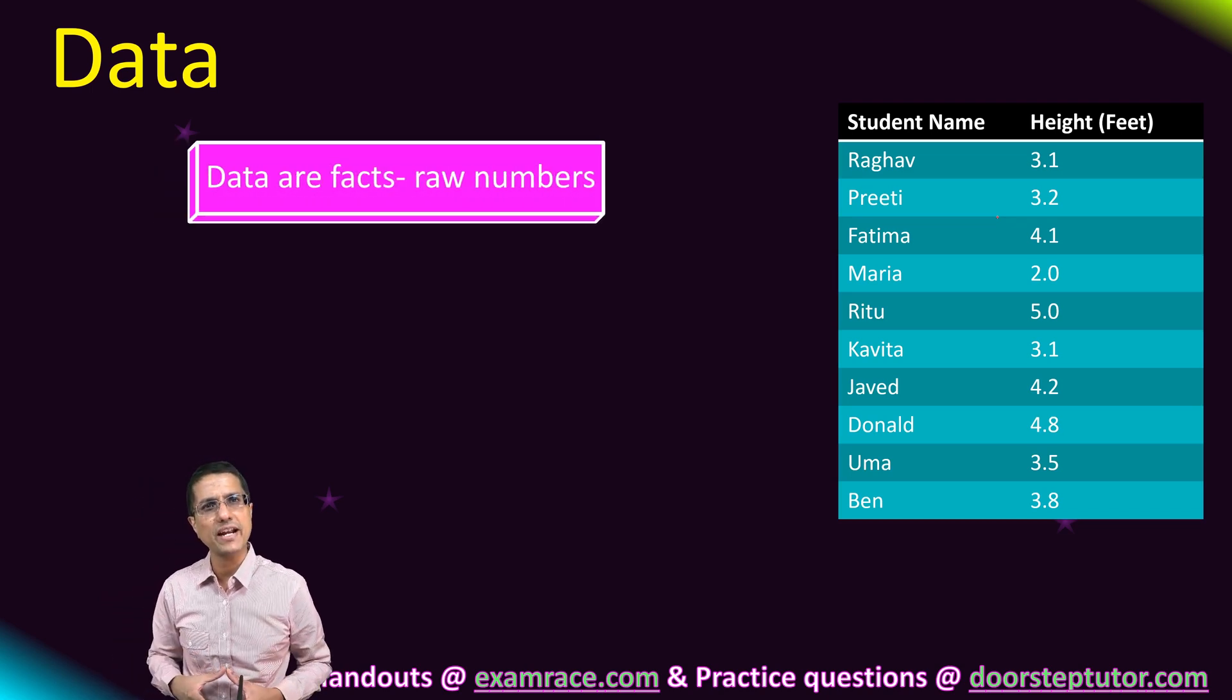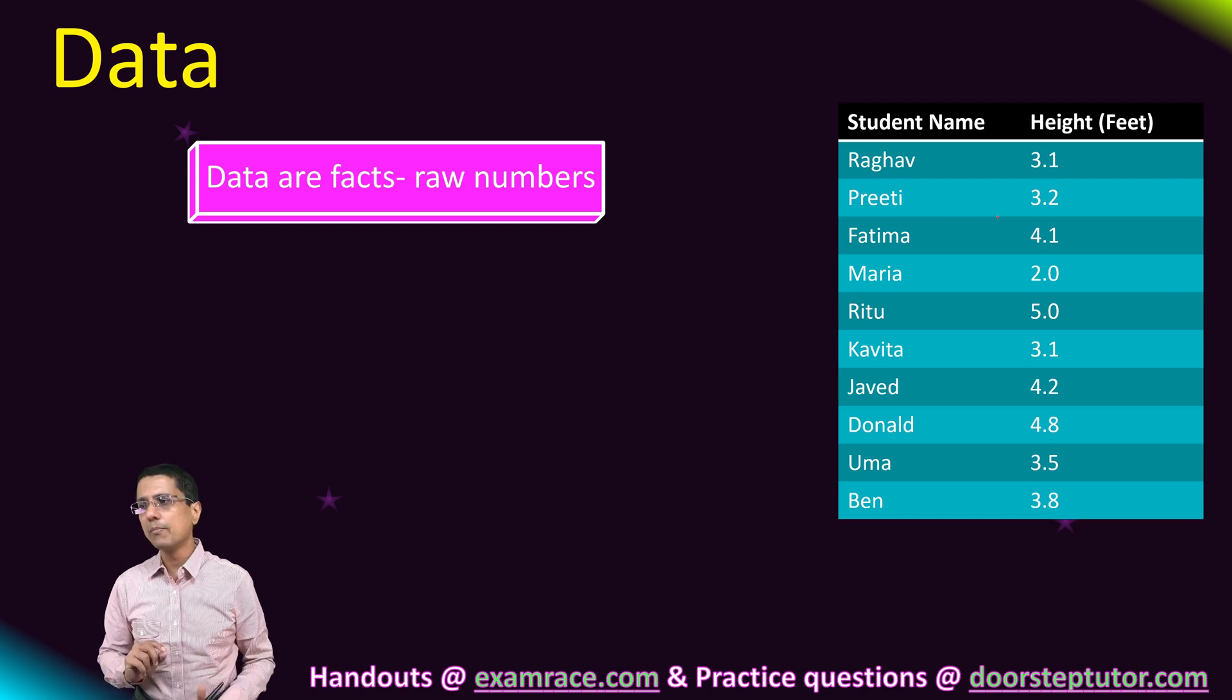So data is just a collection of facts, it's a bunch of facts which have been put together. It might be raw numbers, it might be in the form of numbers or it might not be in the form of numbers.